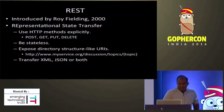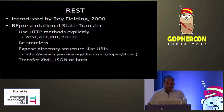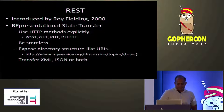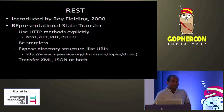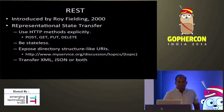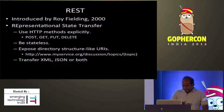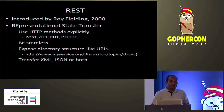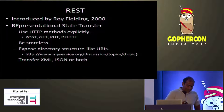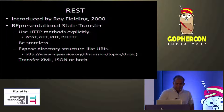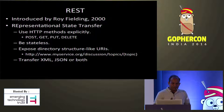REST was introduced by Roy Fielding in 2000. REST means Representational State Transfer. It is based on four principles. The first is to use HTTP methods explicitly — POST, GET, PUT, and DELETE — which represent CRUD operations. POST should always add a resource, GET should always get a resource, PUT should be used for update, and DELETE for delete. If we are not following that, then it is not a REST service.